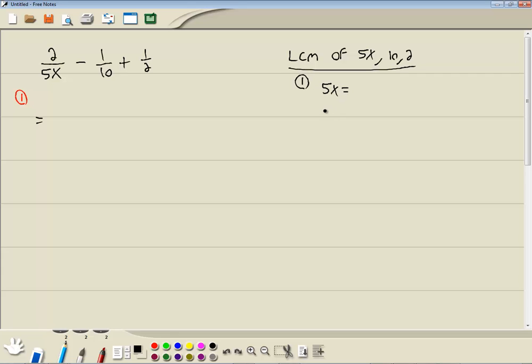We'll write the prime factorization of each one down. Now 2 is prime, so we don't want to do anything there. 5 is prime, and we only have 1x, so that's 5 times x. And 10 is 2 times 5.